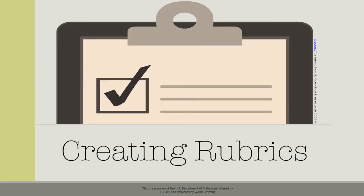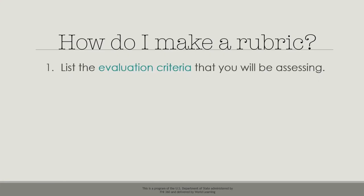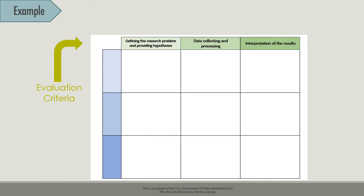Creating rubrics. Now that we have talked about the basics of rubrics, let's look at how we can make one. Step 1: List the evaluation criteria that you will be assessing. This rubric is for evaluating a lab report. The teacher has chosen to evaluate defining the research problem and providing hypotheses, data collecting and processing, and interpretation of the results.